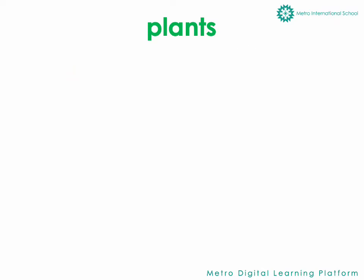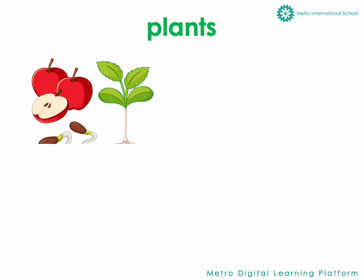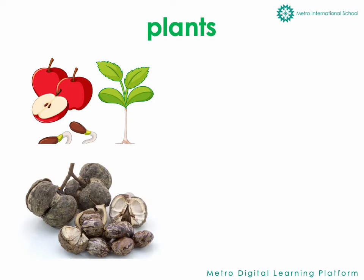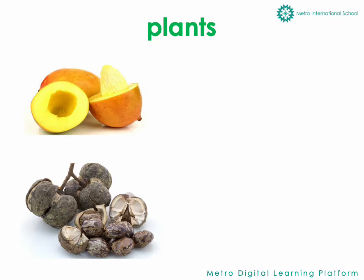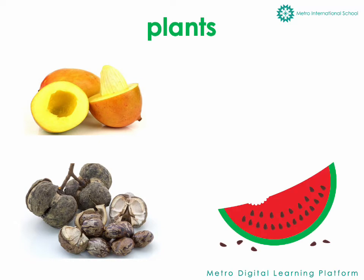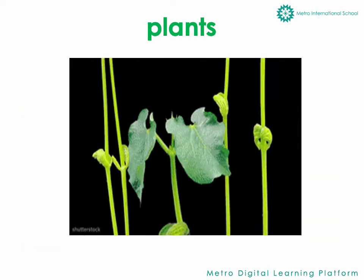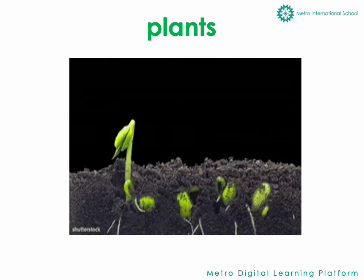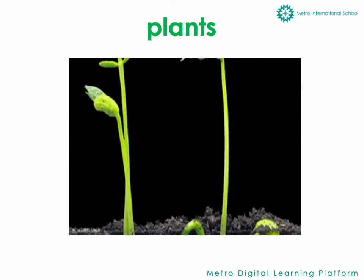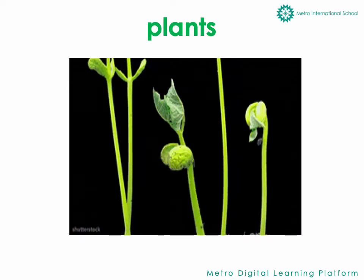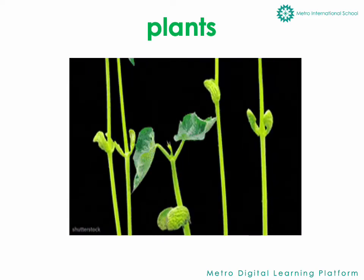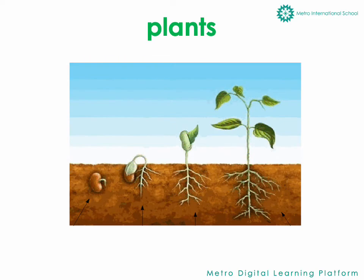Plants produce seeds. These are seeds of some plants: rubber seeds, mango seeds, watermelon seeds, sunflower seeds. Inside each seed is a tiny new plant. Given air, water, and warmth, the tiny plant grows into an adult plant.